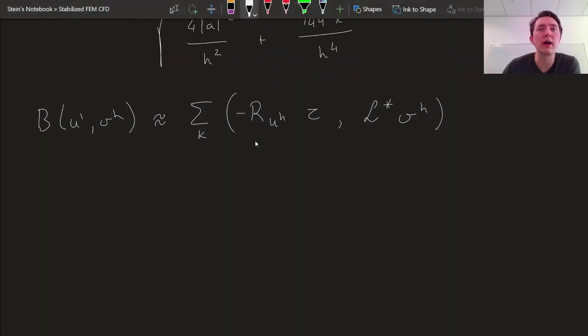So here we have our derived residual-based stabilised method from a fine-scale interaction perspective. We have the adjoint differential operator acting on our test functions.